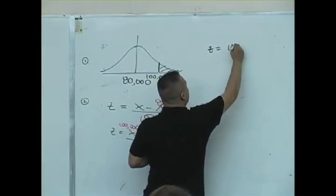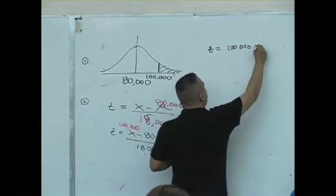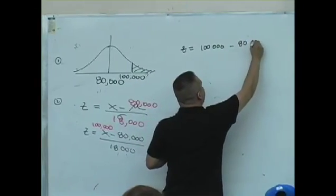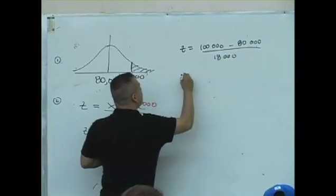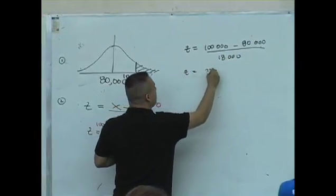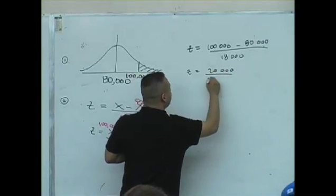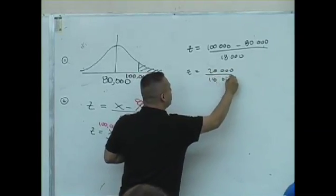Z is $100,000 minus $80,000 divided by $18,000. So Z is going to be $20,000 divided by $18,000, right?